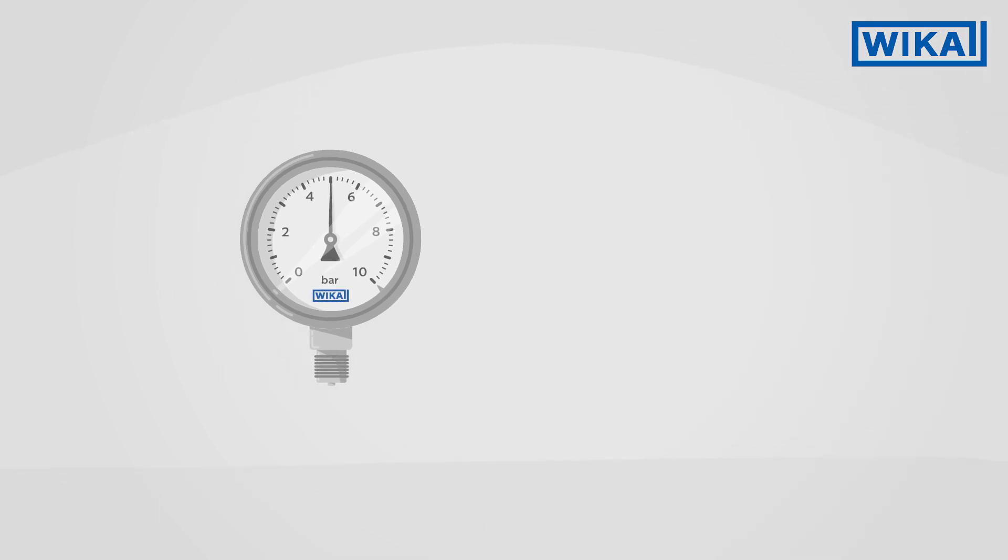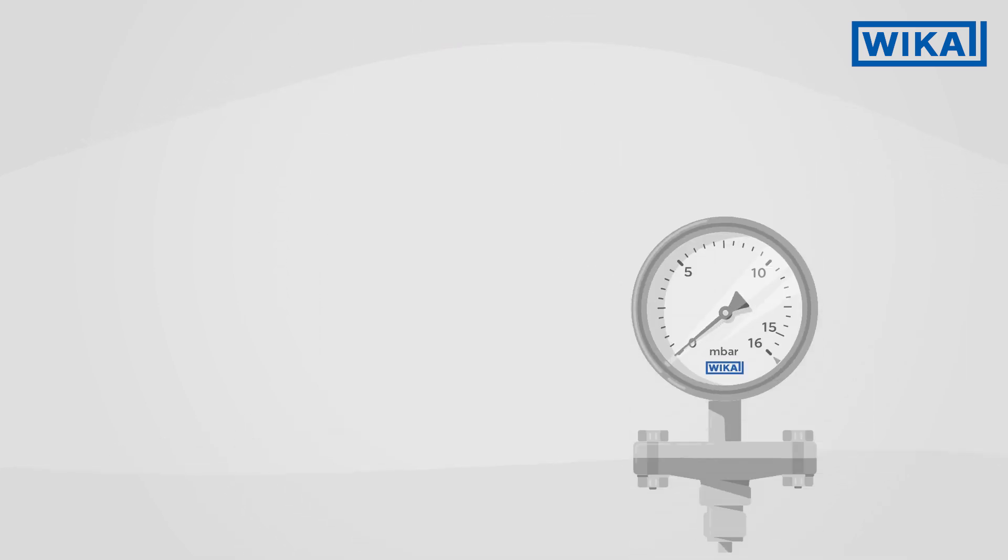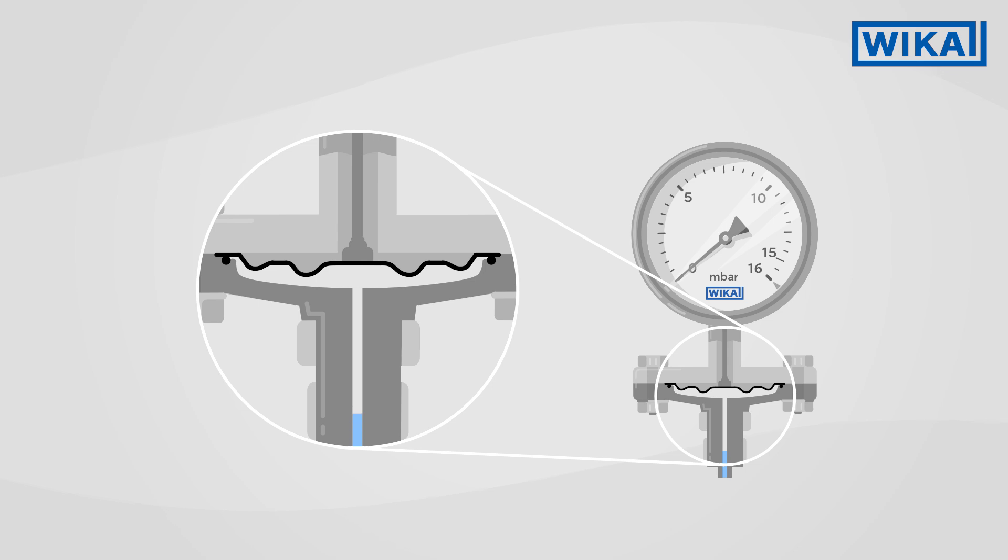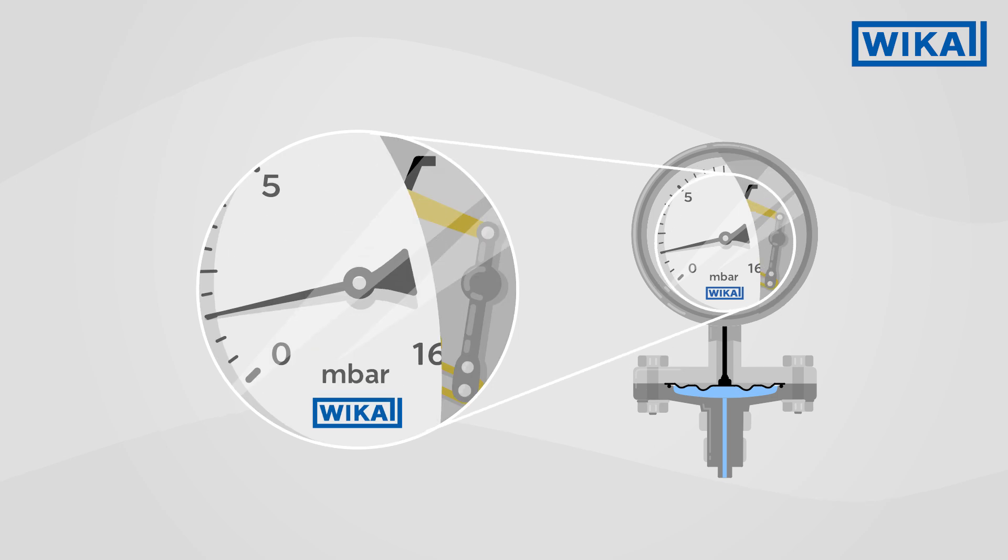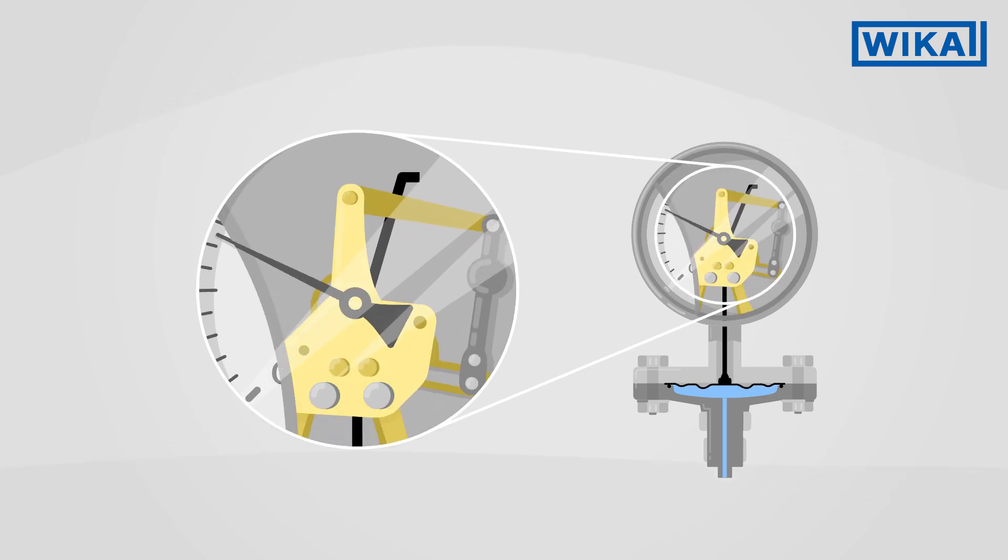However, when Bourdon tube pressure gauges reach their limits, then diaphragm pressure gauges are used. In diaphragm pressure gauges, the pressure is transmitted via a wave-shaped diaphragm to a link. This then transfers the pressure to the movement.